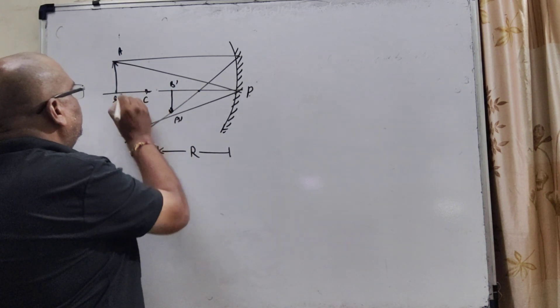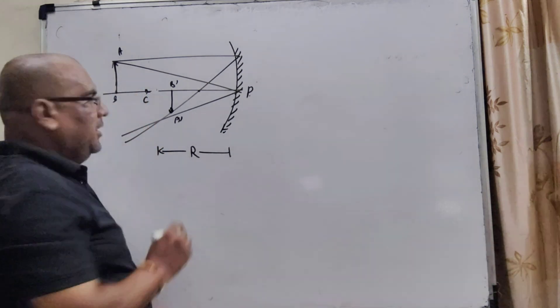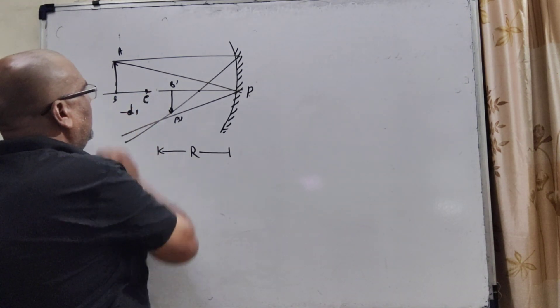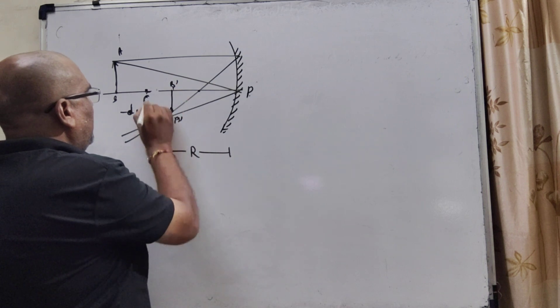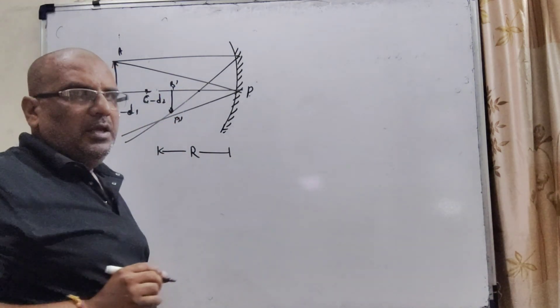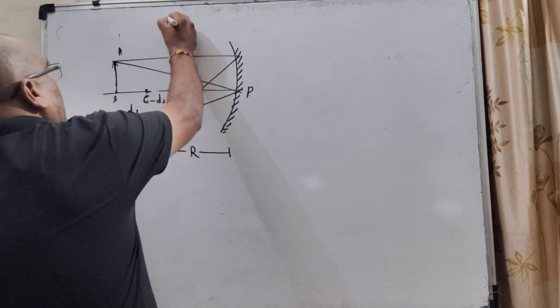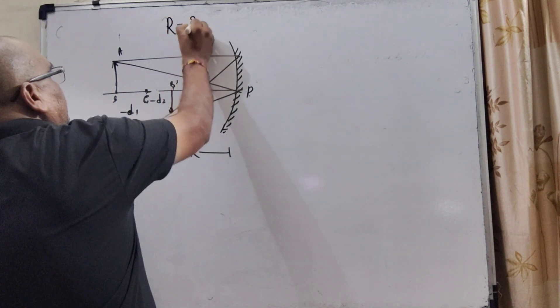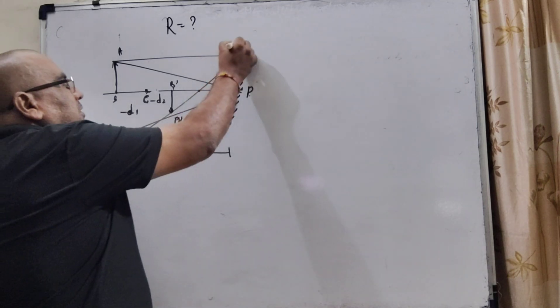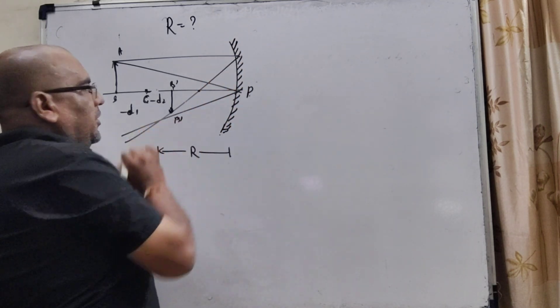And the distance of this object from C, that is given d1. And the distance of image from C, that is given d2. Now, here, we have to find out the radius of curvature. We have discussed all the information according to the diagram.